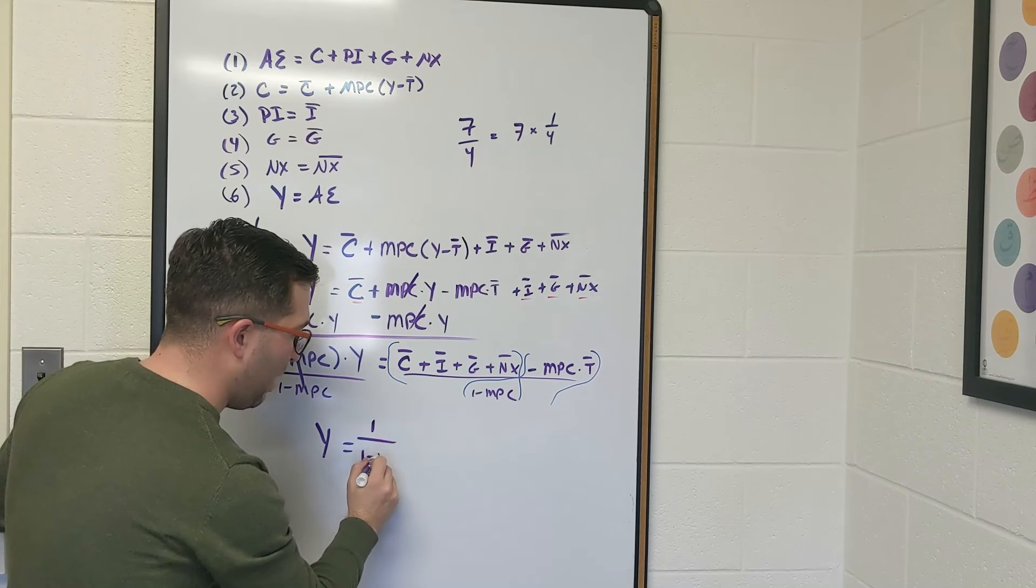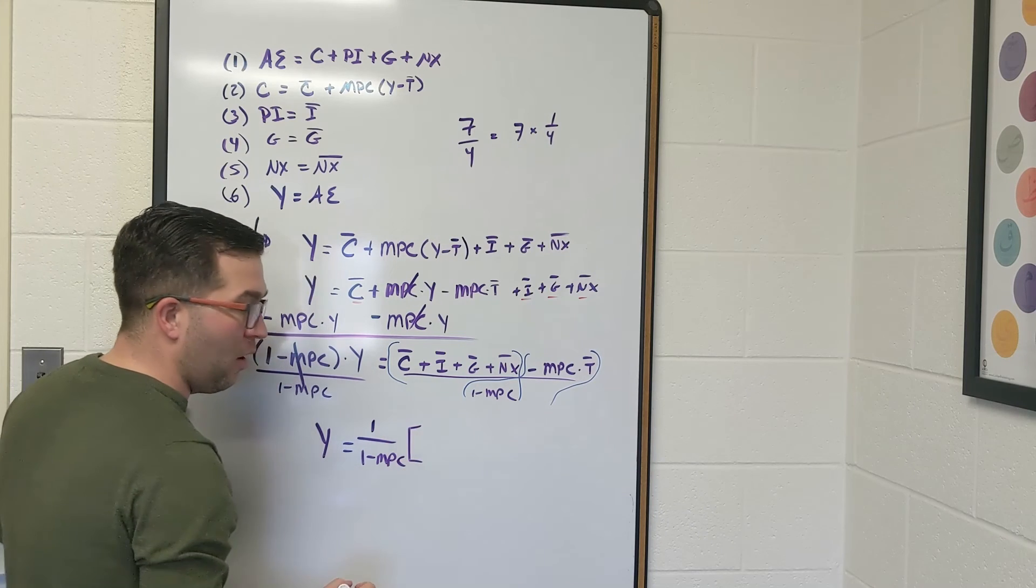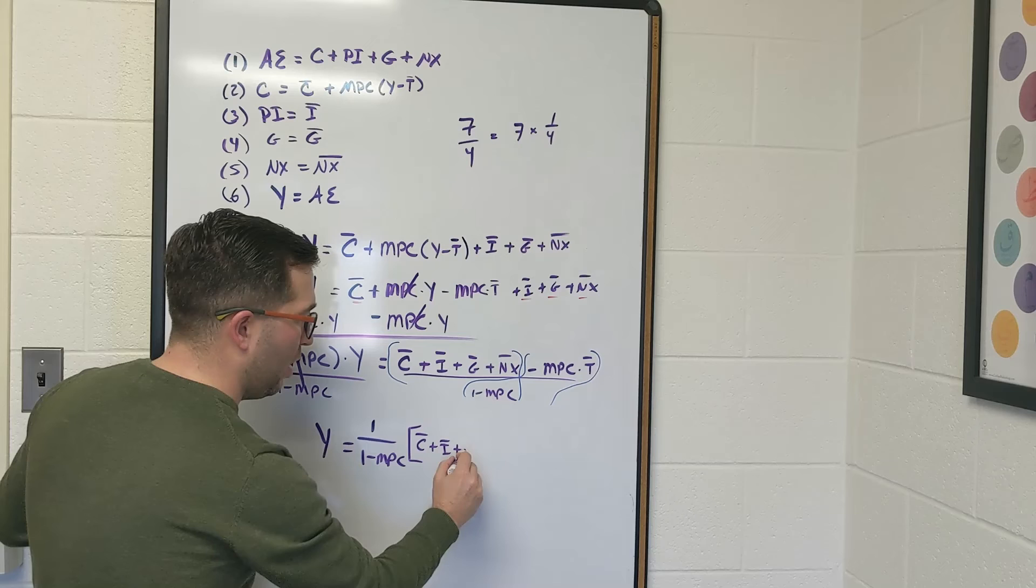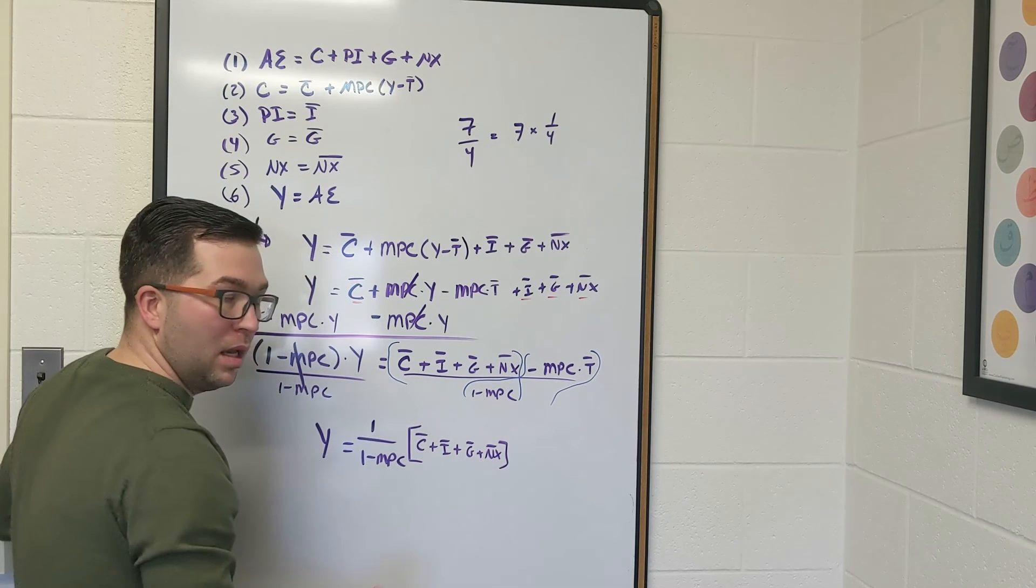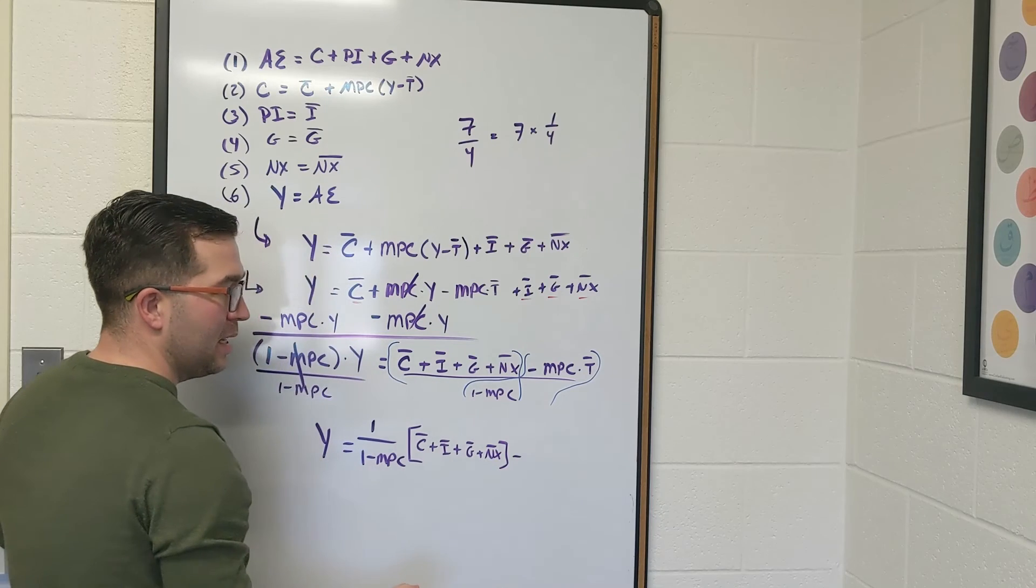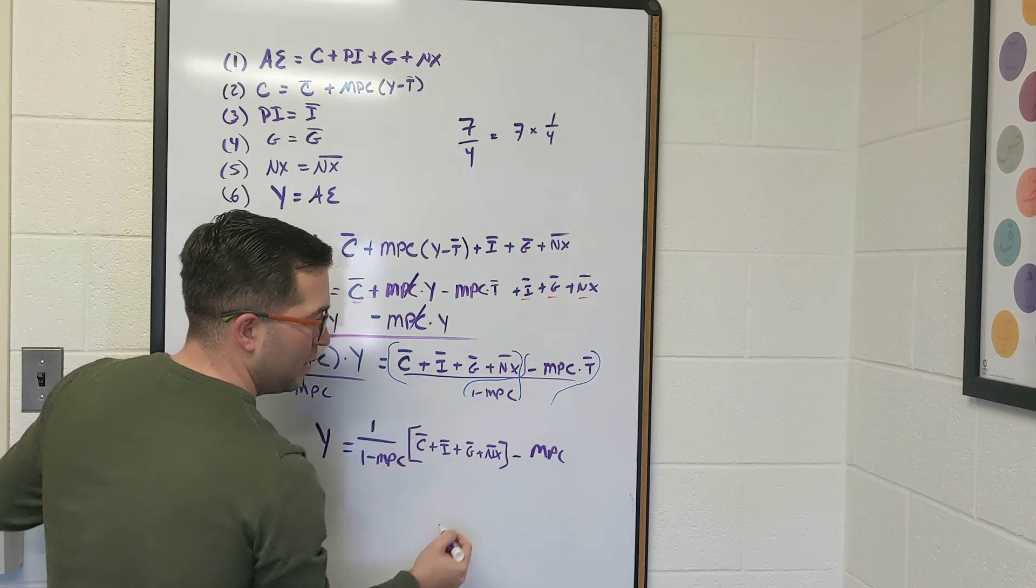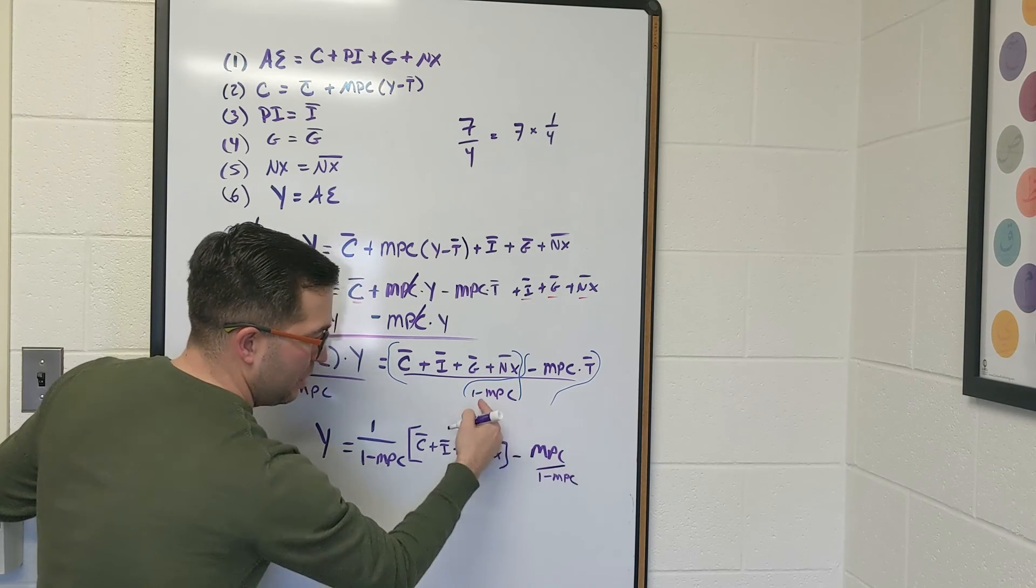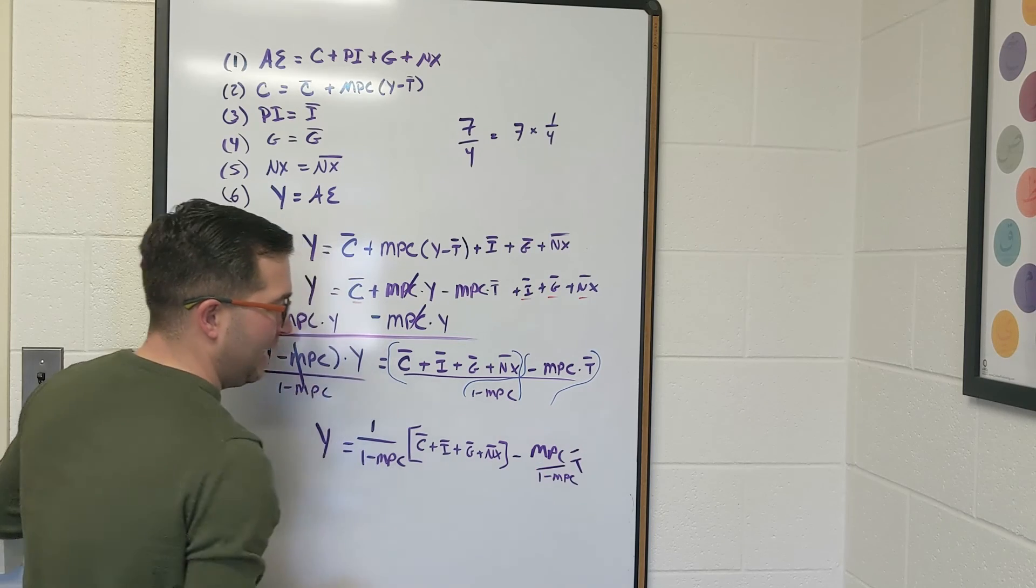1 over 1 minus MPC, that's going to be all multiplied by C̄, Ī, Ḡ, and NX̄. We have a minus sign. I'm going to have MPC, which is this part, divided by 1 minus MPC, which is this part. All of that's going to be multiplied by T̄.